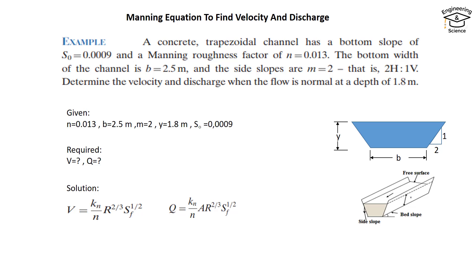And this is the Manning equation to find discharge—the same way, we just added area. What's Kₙ? Kₙ is a conversion factor. For SI units, it equals 1, but for imperial units, Kₙ equals 1.49. We have to take care of this.